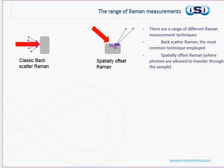A technique which has gained popularity in recent years is spatially offset Raman. Here, photons are allowed to travel through the sample, and the Raman photons are measured from a different point. This technique is very powerful as it allows you to see through transparent or translucent containers. This has been employed, for example, at airport security.